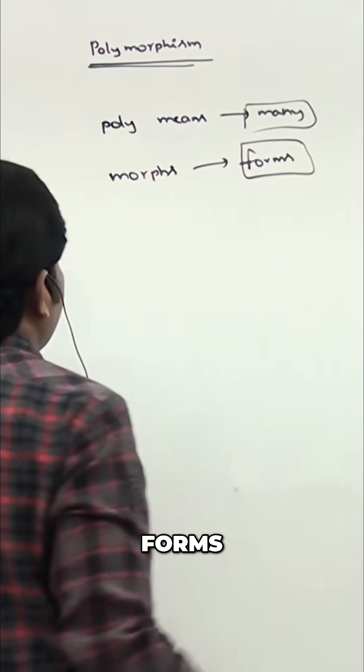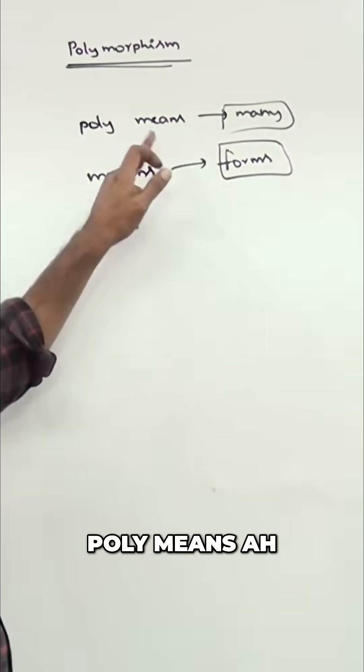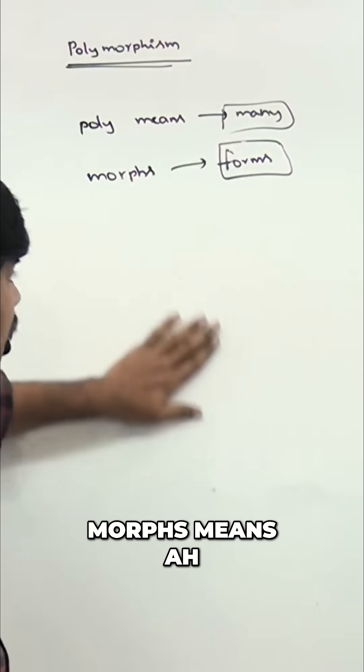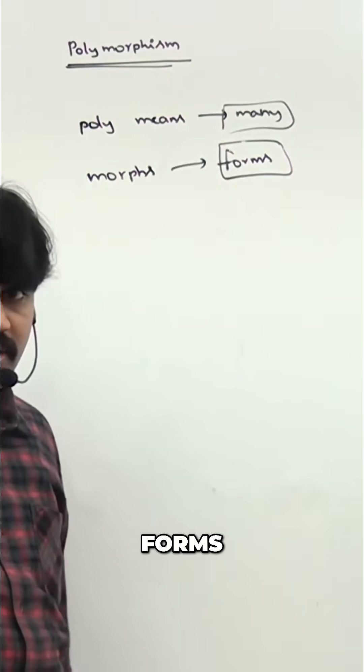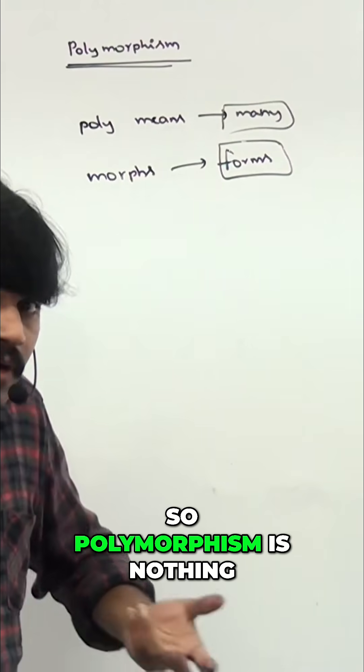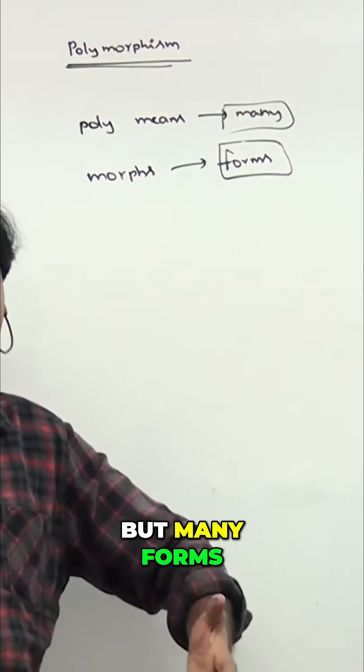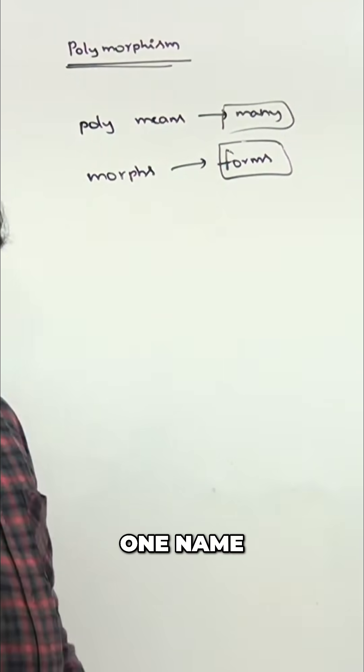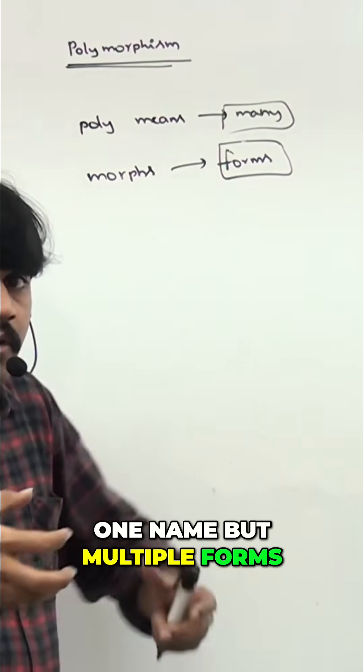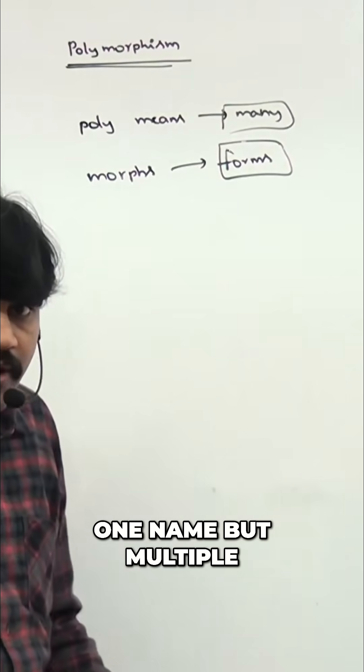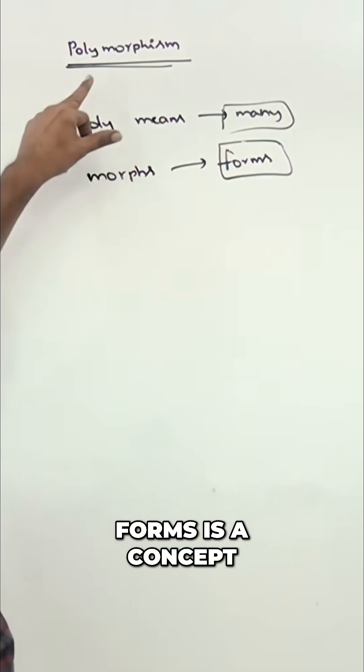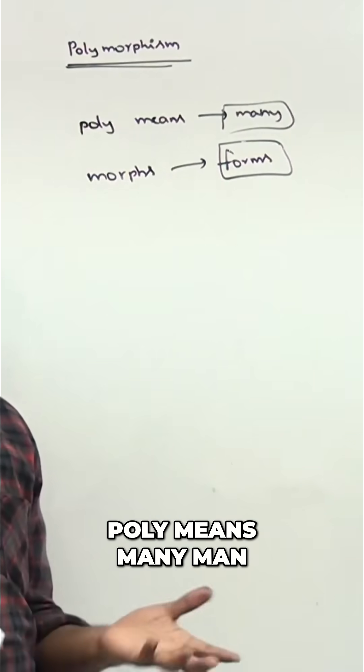Morphs means forms. Poly means many, morphs means forms. So polymorphism is nothing but many forms. One name but multiple forms - one name but multiple forms is the concept of polymorphism.